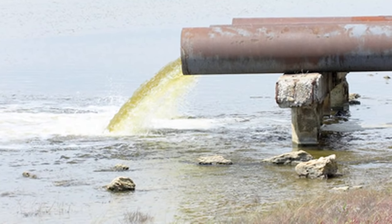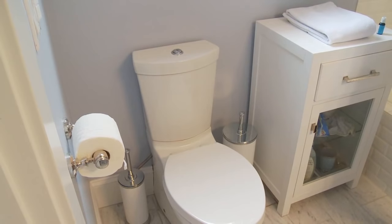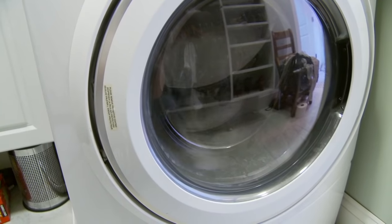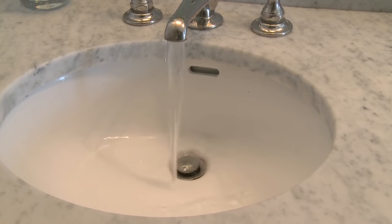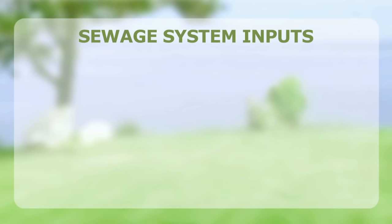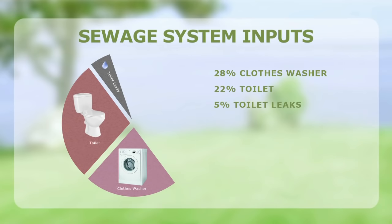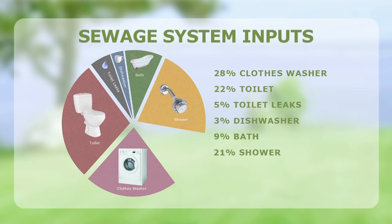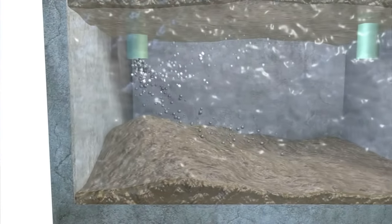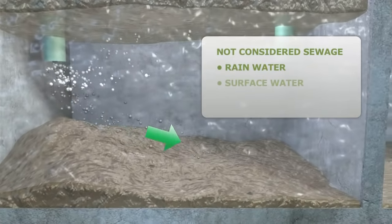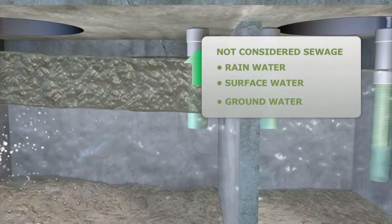So what is sewage, anyway? Sewage is all the wastewater that comes from your house — your toilet, your dishwasher and washing machine, sink and shower drains, and all the solids and waste that comes with it. Up to 50% of domestic sewage is created by your clothes washer and toilet. Your dishwasher produces 3%, while your bath, shower, and sink faucets produce the remaining percentage. All this wastewater exits your house and enters your septic system. By the way, rainwater, surface water, and groundwater are not considered sewage.